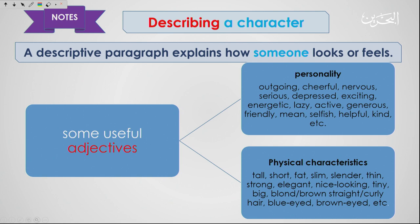For physical characteristics — the appearance — you can say: tall, short, fat, slim, slender, thin, strong, elegant, nice-looking, tiny, big. For hair: blonde, brown, straight, curly. For eyes: blue, brown. We've given you both positive and negative personality traits; depending on the reason you're describing this person, you will choose accordingly.